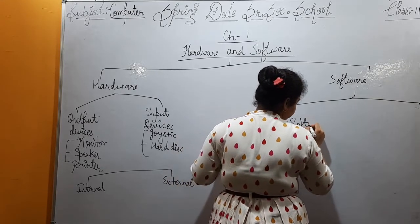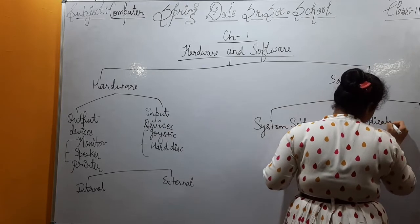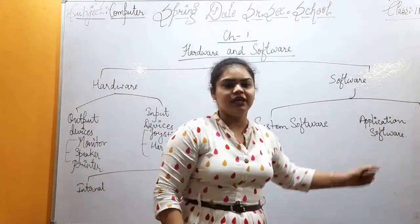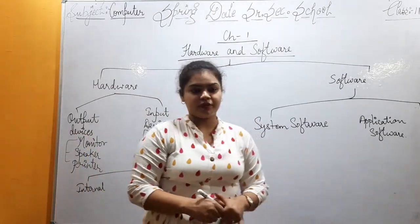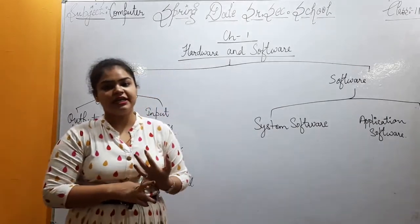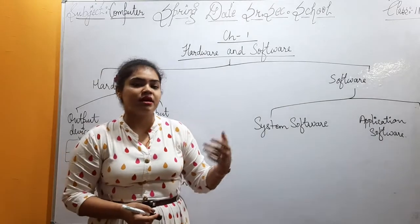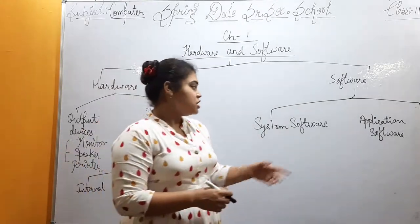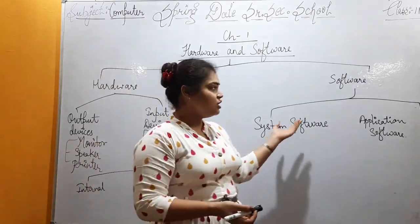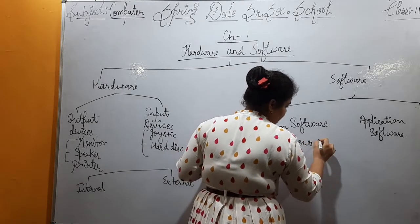Software has two types: system software and application software. System software is the software built into our computer — for example, Windows 7 and Windows 10. When we bring the computer home, the software already inside it is the system software, which helps us use the computer. Examples are Windows 7 and Windows 10.